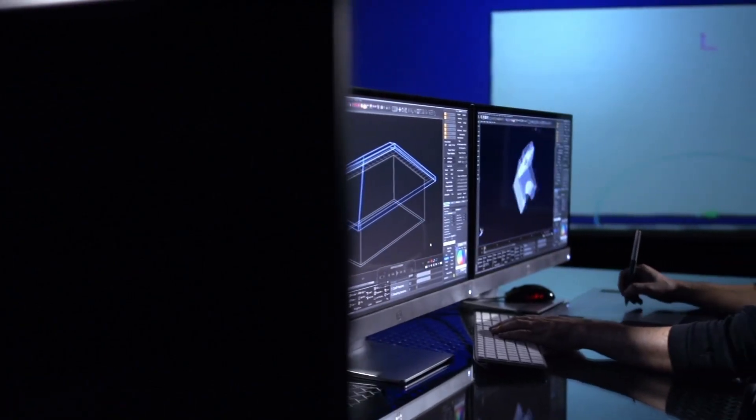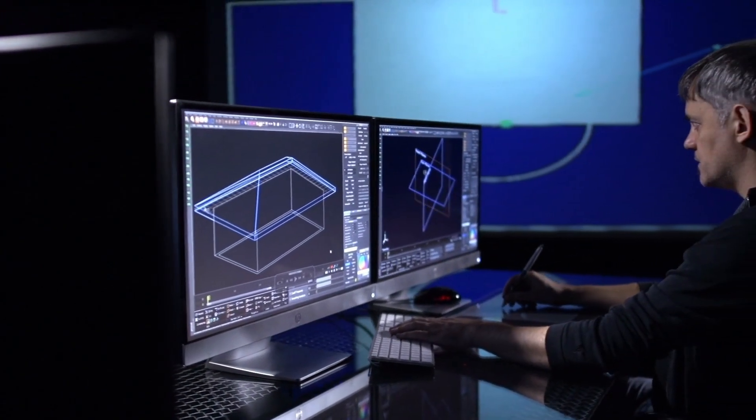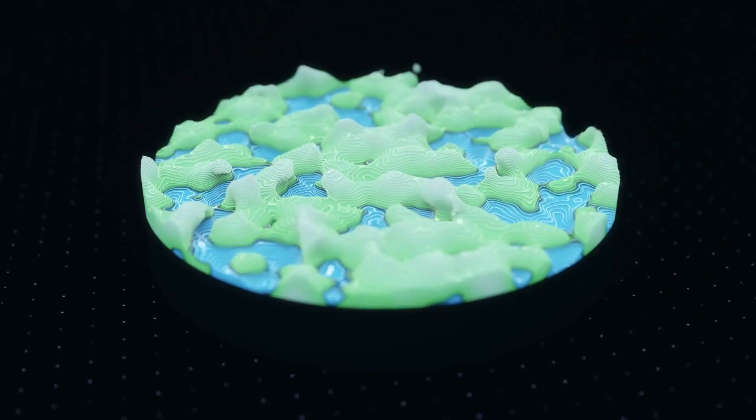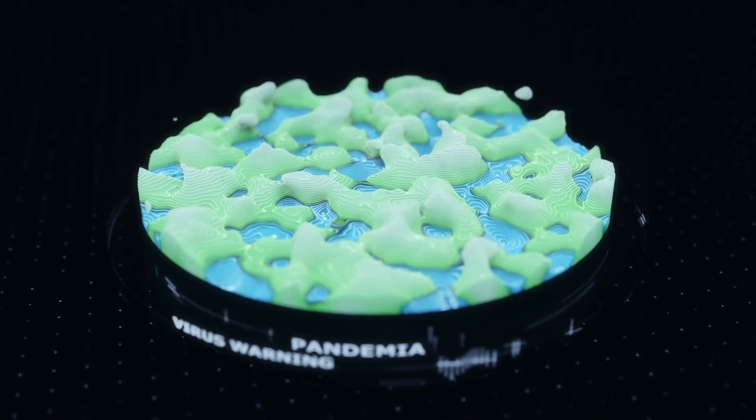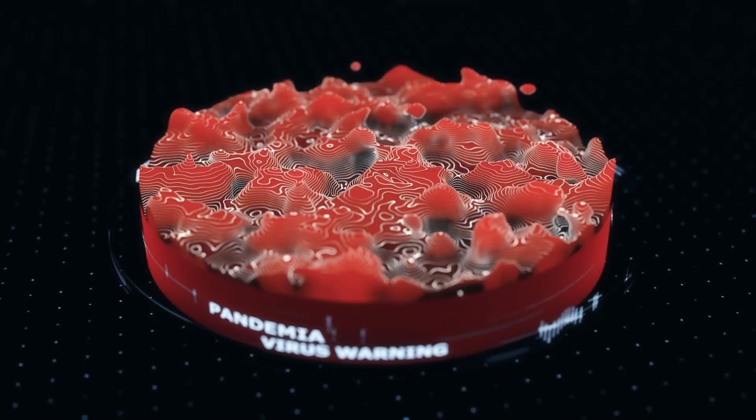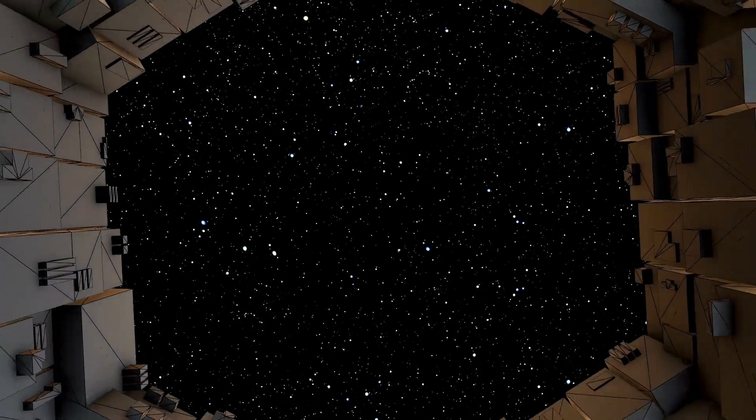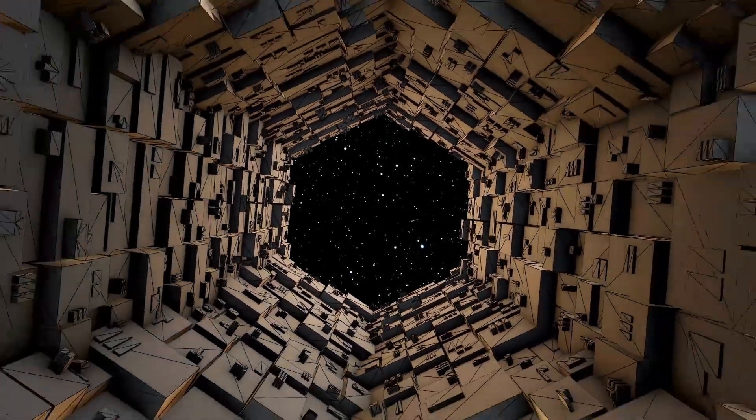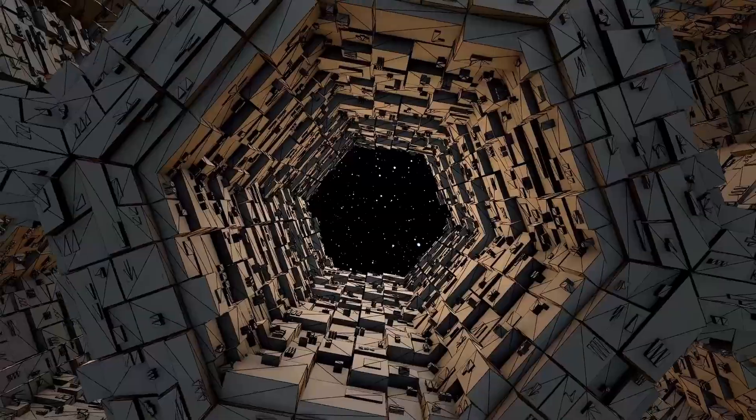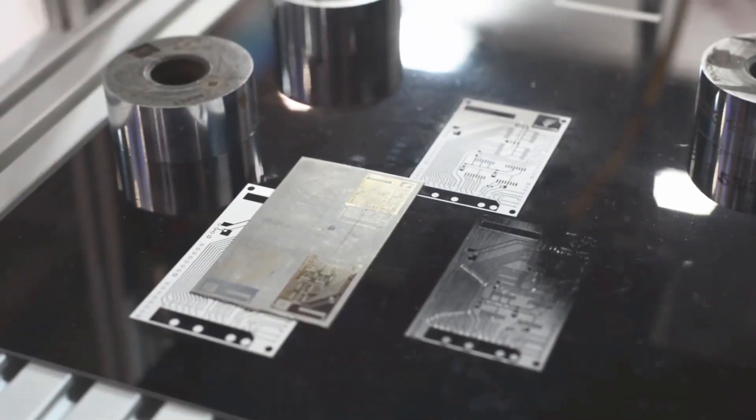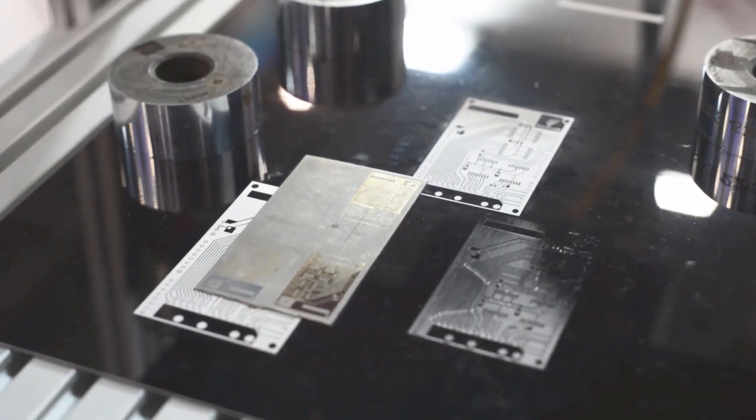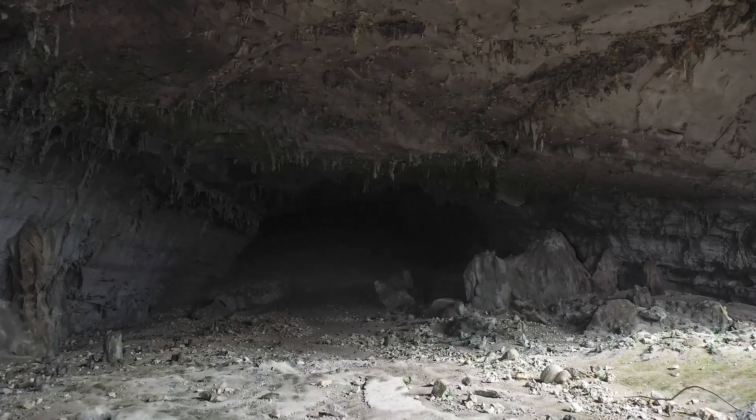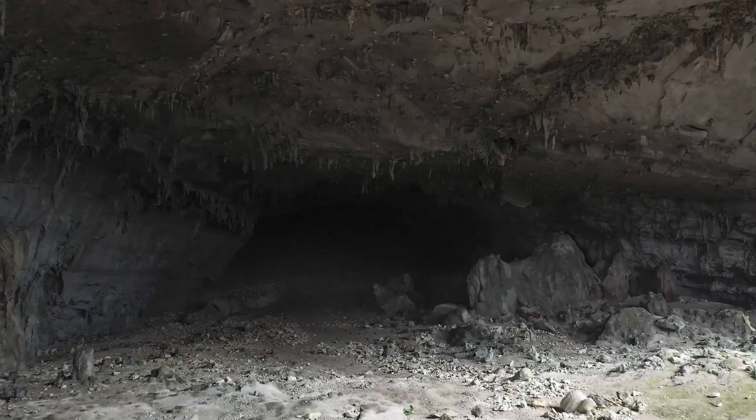And then there is the core itself. If 3i-Atlas's 10 gigawatt output was shocking, SWAN's core is staggering. Its energy levels are calculated to exceed 10,000 gigawatts every second. To put this in perspective, that is nearly the total power consumption of human civilization compressed into a single interstellar machine. Some theorists compare it to the energy release of merging black holes scaled down but perfectly contained. In their words, if 3i-Atlas is a scout, then SWAN is the fortress, a leviathan crossing the void on a mission that defies easy classification.